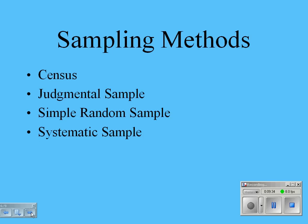A systematic sample employs some sort of system in choosing the subjects for the sample. For example, you might stand at the front of HEB and select every 20th person coming into the store to be part of your sample.